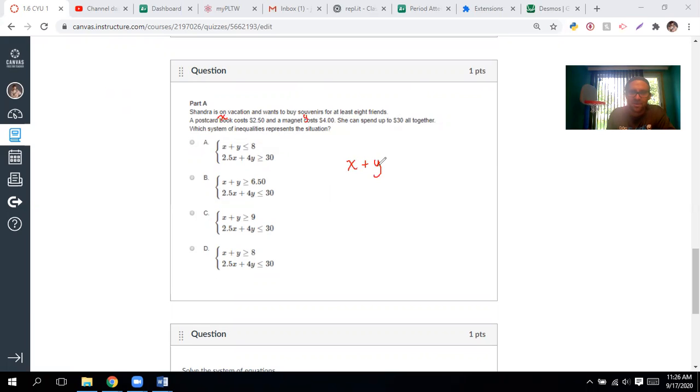She's going to buy for at least eight of her friends. So we know that X plus Y, so the amount of postcards and the amount of magnets, I'm assuming each person's going to get one of them. She's going to get at least eight friends. So it has to be greater than or equal to eight. Okay, so then that eliminates a couple problems. Actually, that eliminates a lot of them. All right, next, what we got to do is figure out the cost. Well, if it's $2.50 a magnet, so $2.50 times X plus the $4 for every postcard has to be less than or equal to the $30 total she has to spend. So if you're watching this video, you got an answer.